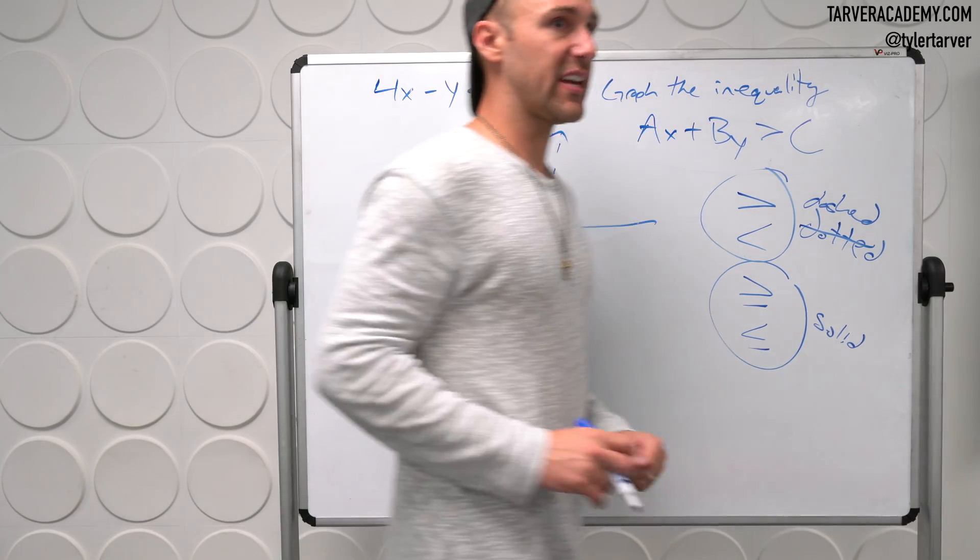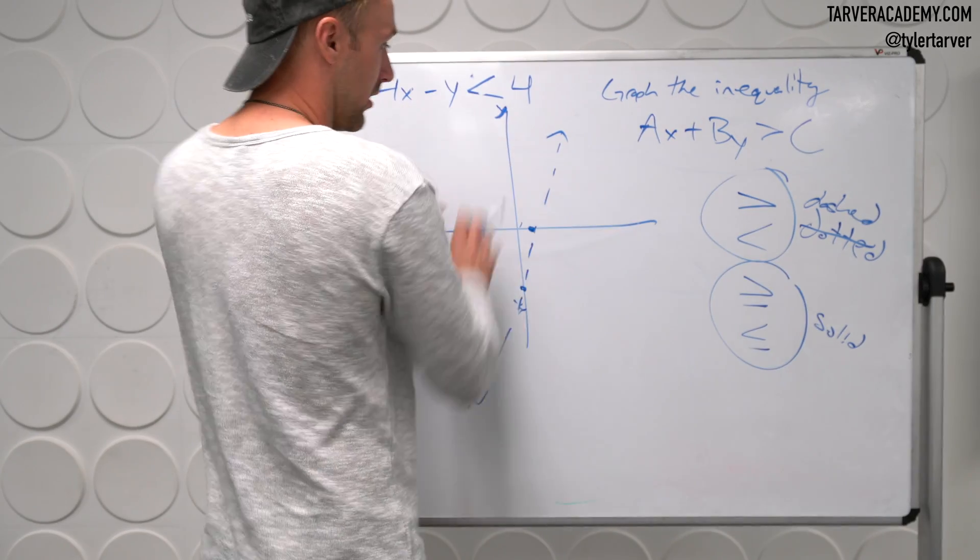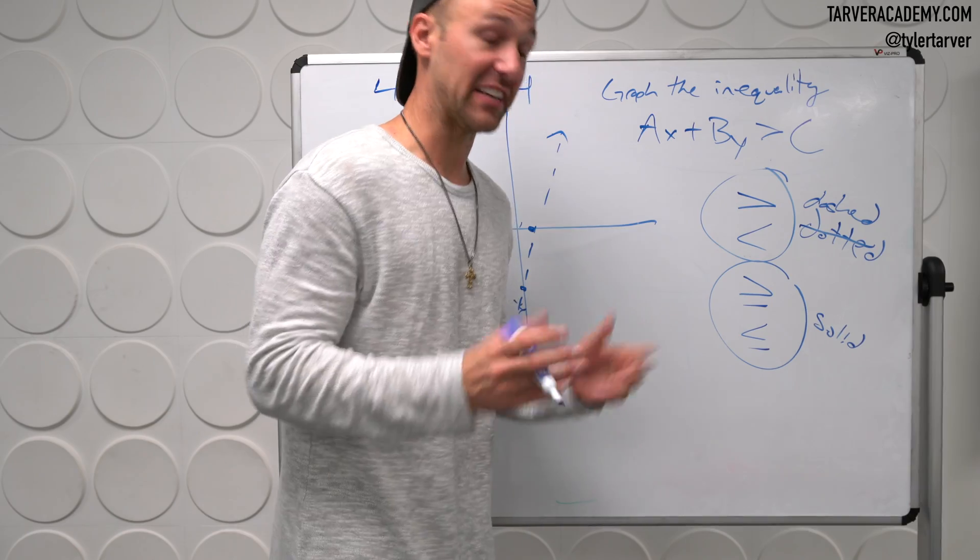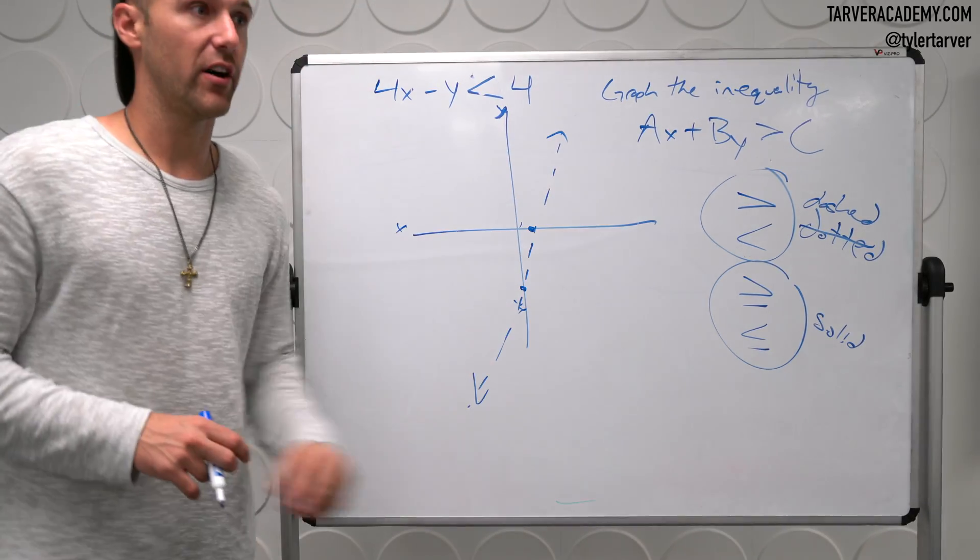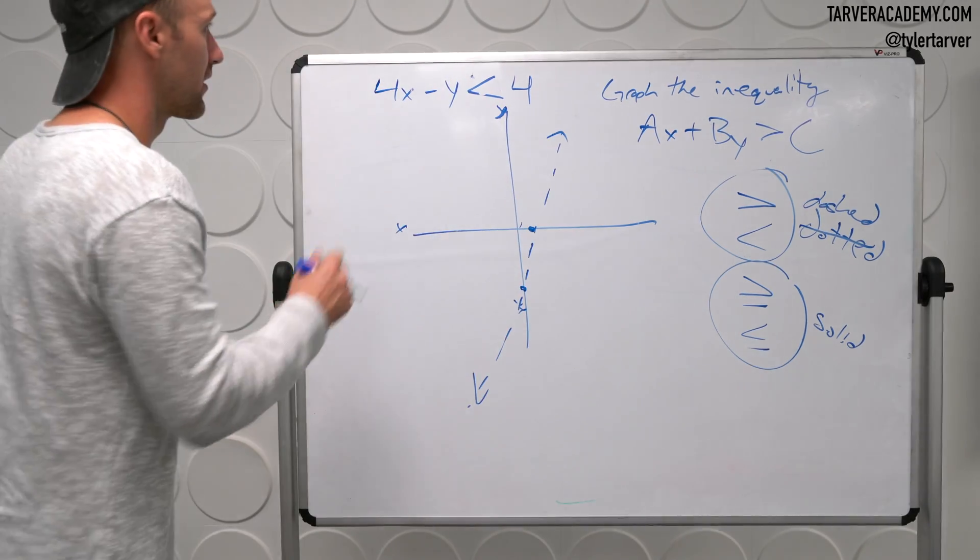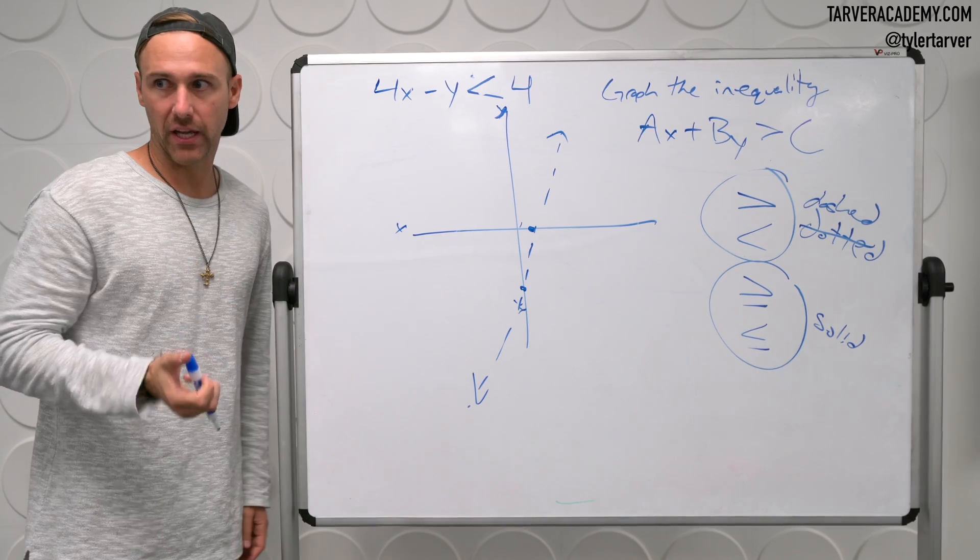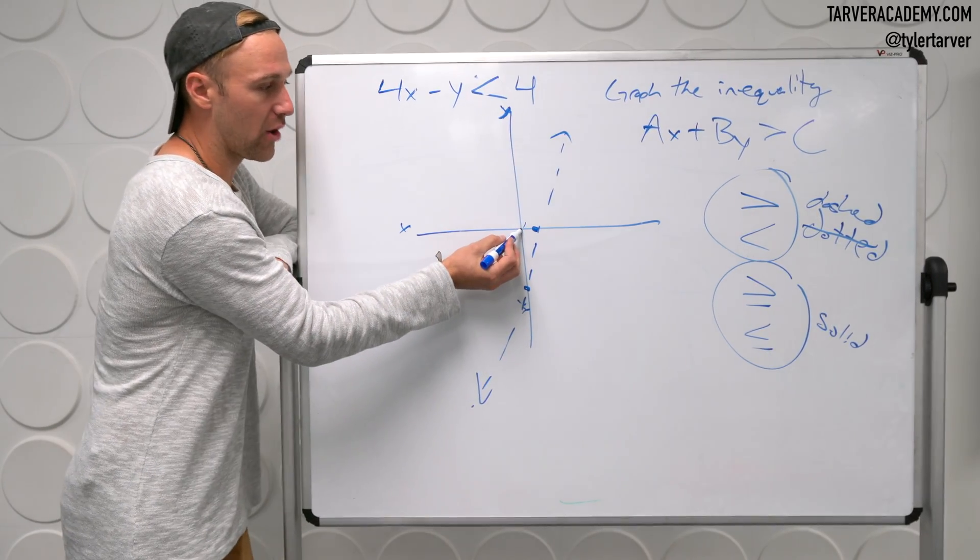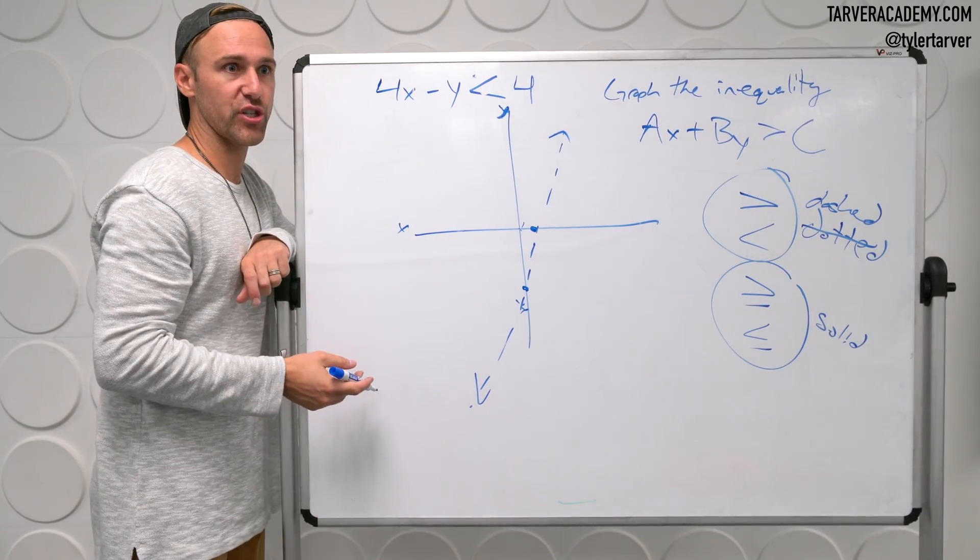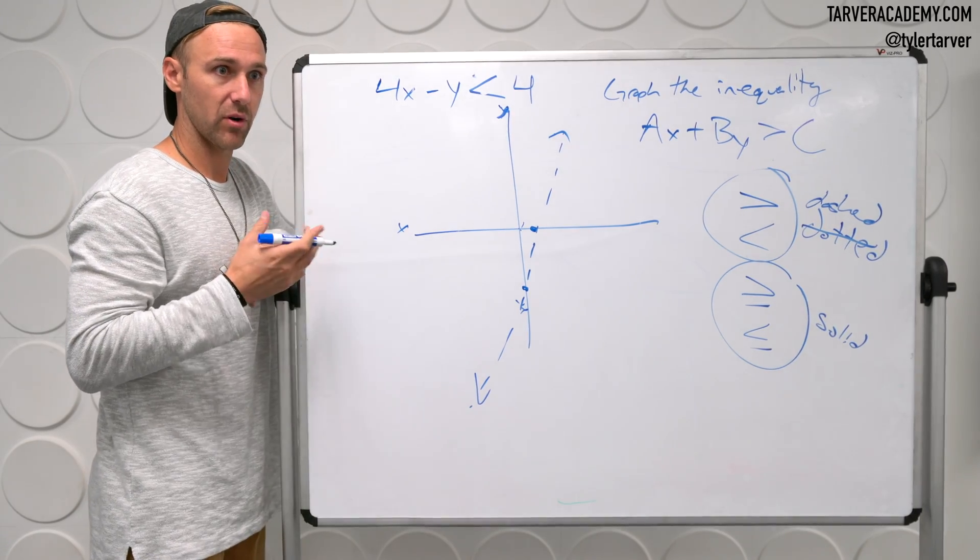Now, last step. We have to figure, do we shade here or do we shade here? Yes. Yes. That's close. We're going to shade one of those to say, these are all the possible answers. The easiest way to do this, in my opinion, plug in the origin. If it works, shade the side where the origin is. If it doesn't work, shade the other side.